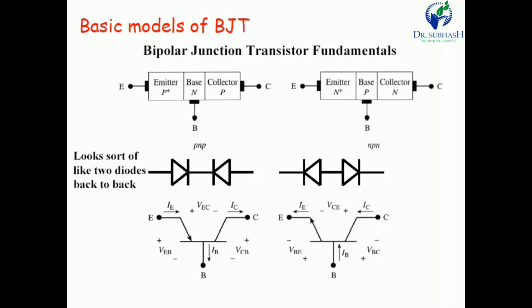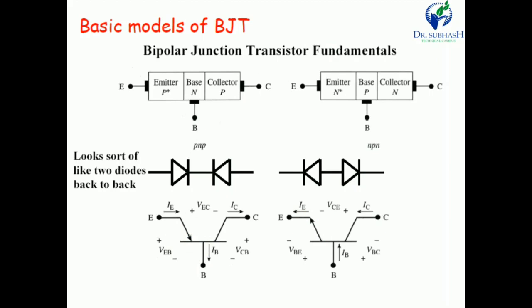You must remember the BJT symbol, as it is used in circuit design. In a PNP transistor, the arrow on the emitter points inward, while in an NPN transistor the arrow points outward. You must remember this arrow direction because drawing the wrong arrow indicates a different component — NPN and PNP are different.